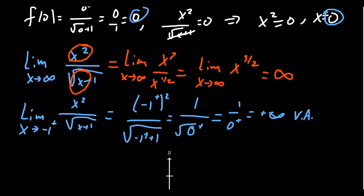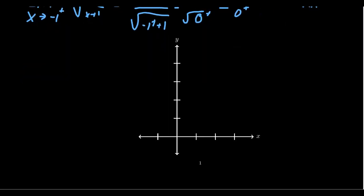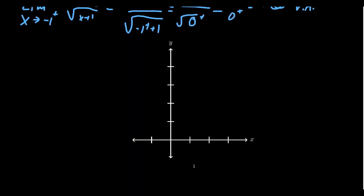Let's record what we have so far on the graph. We know this function goes through the origin — that's its x and y-intercept. We know on the right-hand side it points up. We also know there's a vertical asymptote at x equals negative 1, so the graph is going to point up on the right-hand side of that asymptote as well.